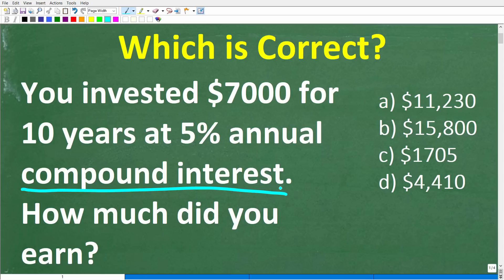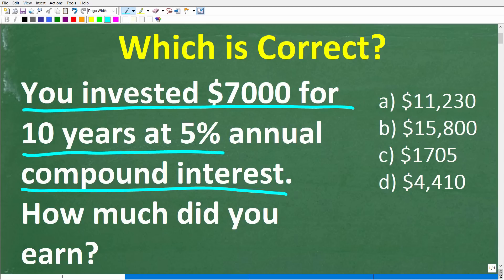Let's take a look at this problem. You invested $7,000 for 10 years at 5% annual compound interest. How much money did you earn on this investment?